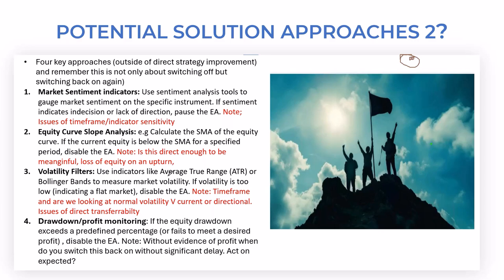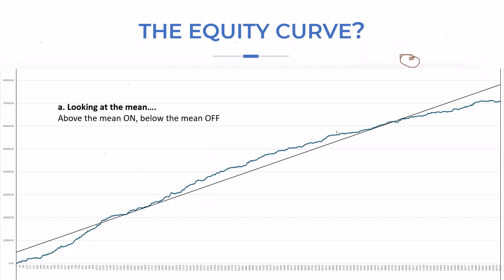We can also monitor drawdown and profit on the numbers — if something pulls back one percent, switch it off — but then it has to perform well again before we re-enter. If we're looking at equity profit over a period of time, the solution might be to say once it's got over that drawdown period we're good to go again. Looking at the equity curve itself with a mean line — if we said switch on when above the mean and off when below, it doesn't really work because we need a period of time for it to establish.